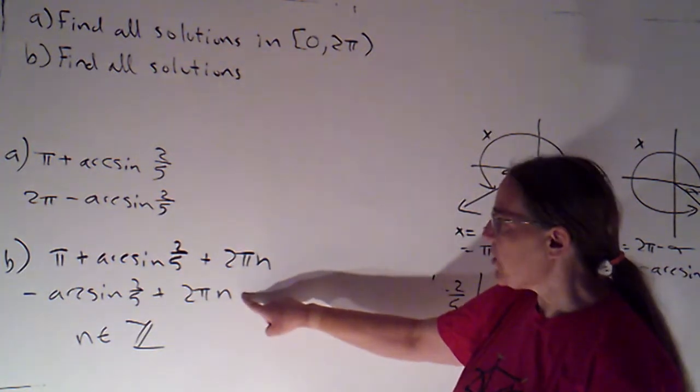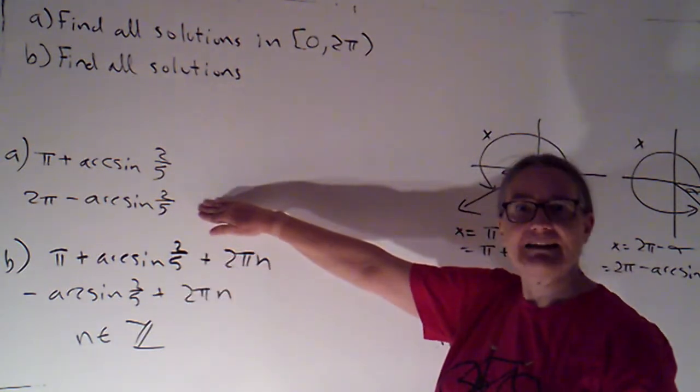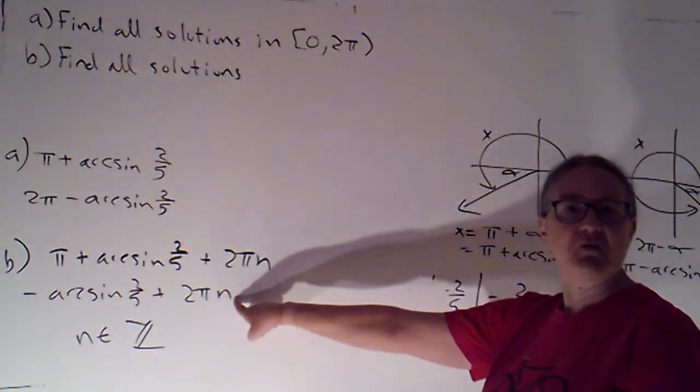If I let n be 0, I'm getting negative arc sine of 2 fifths, which is what I'd get if I added a negative 2π to this. So I'm getting the same answers. This is just a little bit more concise.